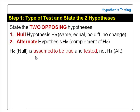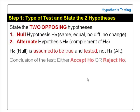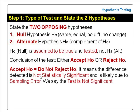We always assume the null hypothesis to be true, and we test it by finding the probability that this assumption is true. We do not test the alternate hypothesis. The conclusion of a hypothesis test is either accept null hypothesis or reject null hypothesis. Some prefer to use the term 'do not reject null hypothesis' instead of 'accept null hypothesis', but they mean the same thing.